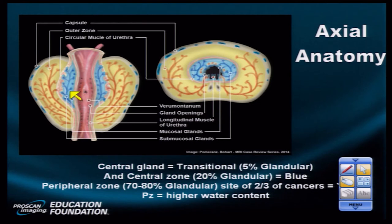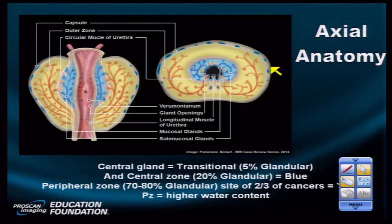Here's a coronal projection showing the course of the urethra right down the midline, which separates the gland into a right half and a left half, and also into a base and an apex. It is the apex and the antero-apical region that is most difficult for urologists to see or access — either with biopsy or with transrectal ultrasound. The small blue structures represent the periprostatic venous plexus, and the neurovascular bundles are located at the seven o'clock and five o'clock positions in the axial projection.